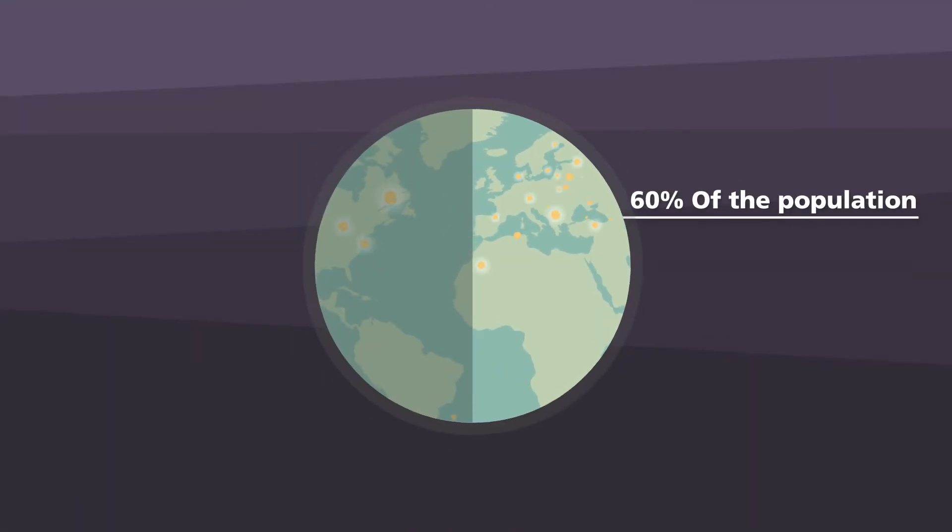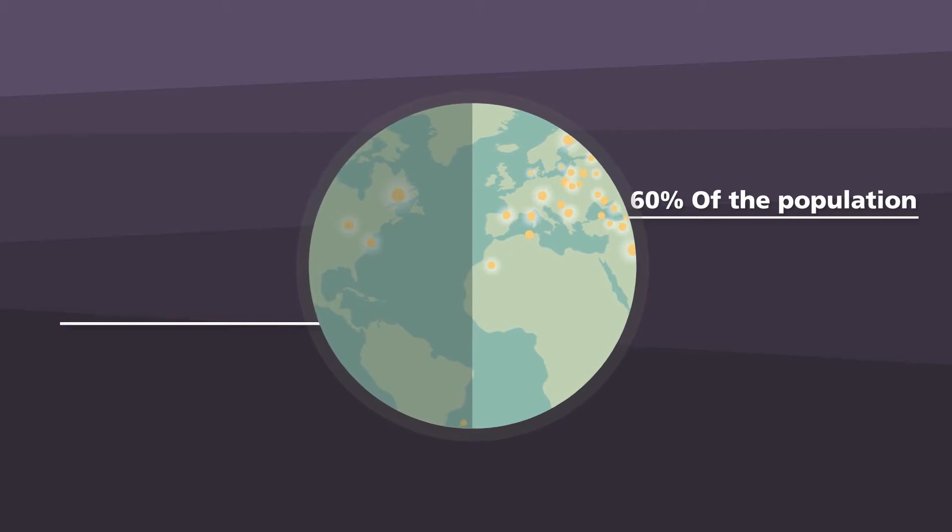In 2032, over 60% of the world's population will live in cities, covering less than 2% of the Earth's surface.